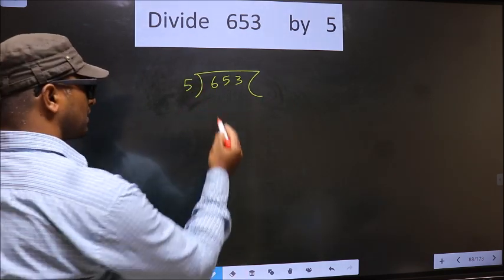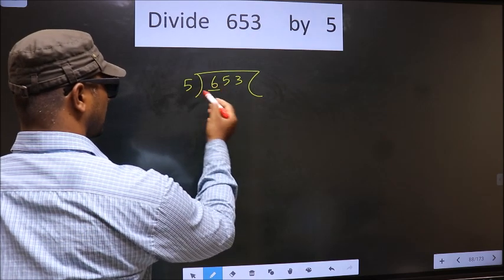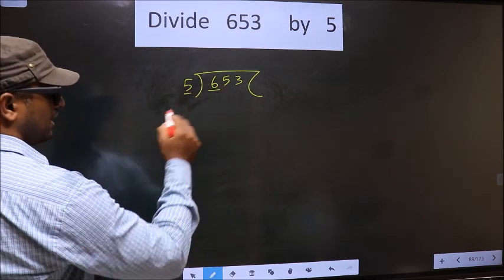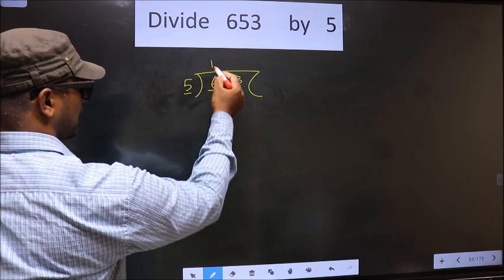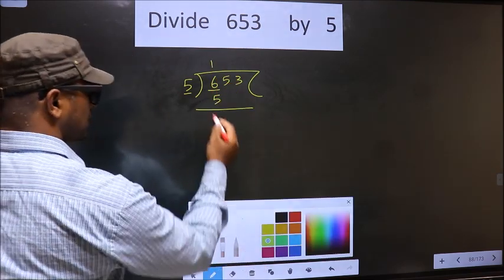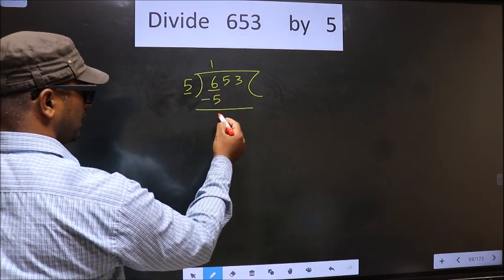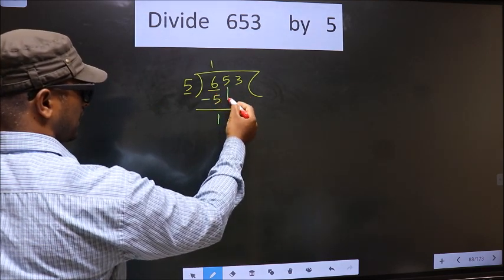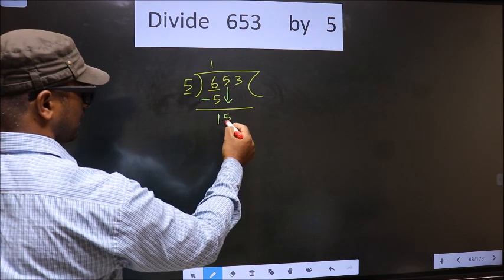Now here we have 6 and here 5. A number close to 6 in five table is 5 once 5. Now you subtract. 6 minus 5, 1. Now you bring down the beside number. So 5 down.